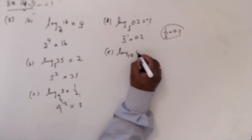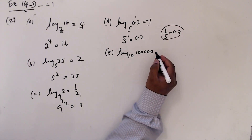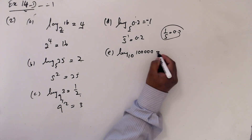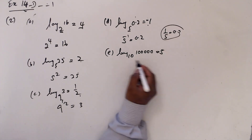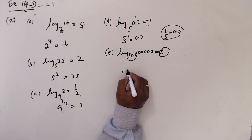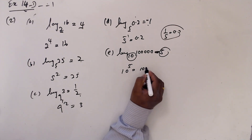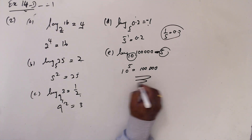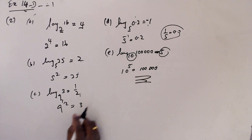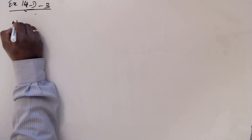E: log base 10 of 100,000 equals 5. So this is the base, this is the power. So 10 to the power of 5 is equal to 100,000. So this is the base — this is part a.